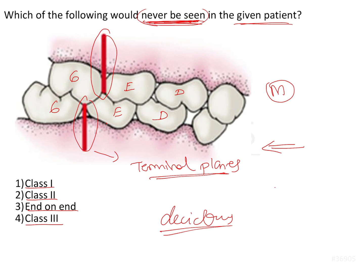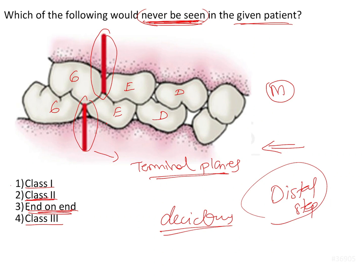In the given patient, the distal surface of the mandibular molar is more distal compared to the maxillary molar — this is a distal step. A distal step with minimal growth results in class 2; with advancement of the mandible it results in end-on; with further mandibular growth it could even reach class 1. However, class 3 will never be seen, because it would require an unnatural amount of forward mandibular positioning. From a distal step, even with growth, the relationship goes to class 1 at most but never class 3.